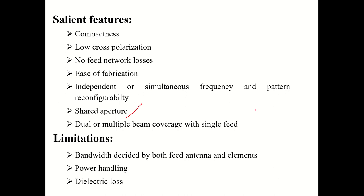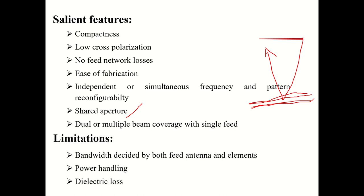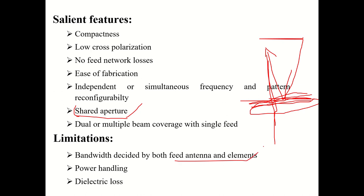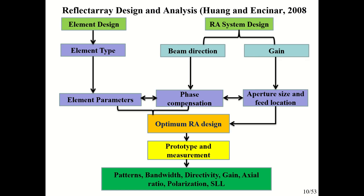Additional features include compactness, low cross-polarization, and shared aperture operation — where a reflectarray and a transmitarray share the same aperture. One band reflects while another band transmits, achieving both operations simultaneously. The main limitation is bandwidth, which is constrained by both the feed antenna and the elements. Unlike a parabolic reflector that ideally offers infinite bandwidth (limited only by the feed), the reflectarray element also dictates bandwidth, along with dielectric losses.